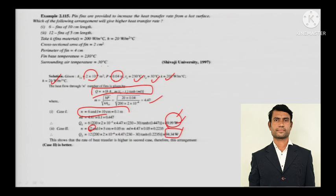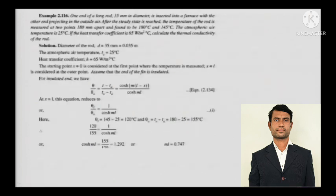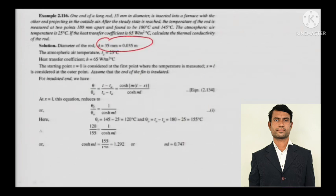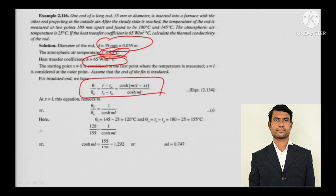Next problem: one end of a long rod of 35 mm diameter is inserted into a furnace, with the other end projecting into outside air. At steady state, temperatures at two points 180 mm apart are 180°C and 145°C. Atmospheric air temperature is 25°C, heat transfer coefficient H = 65 W/m²°C. Calculate the thermal conductivity K of the rod.